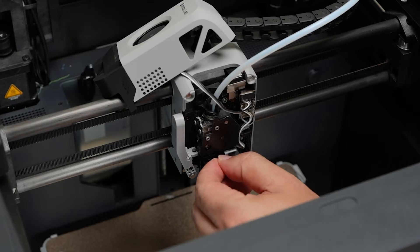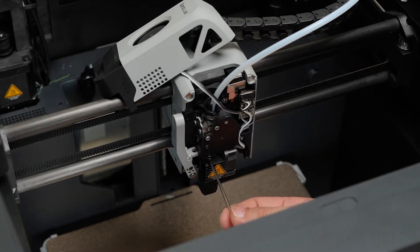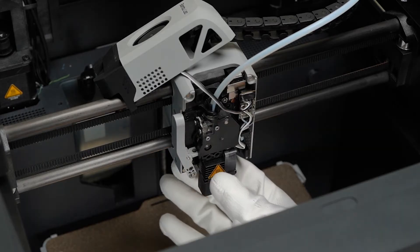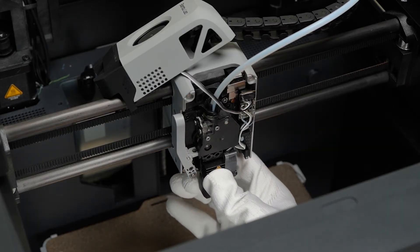Next, you will see two screws that hold the hot end in place. Carefully remove these screws. Once the screws are out, gently remove the hot end from the extruder.